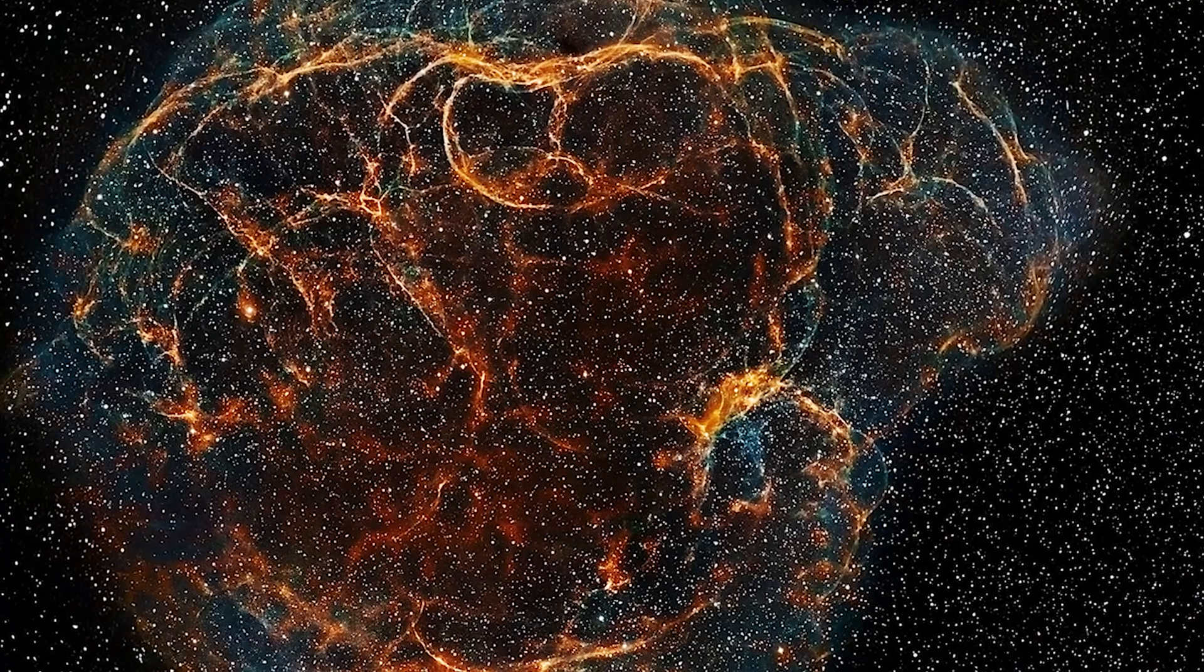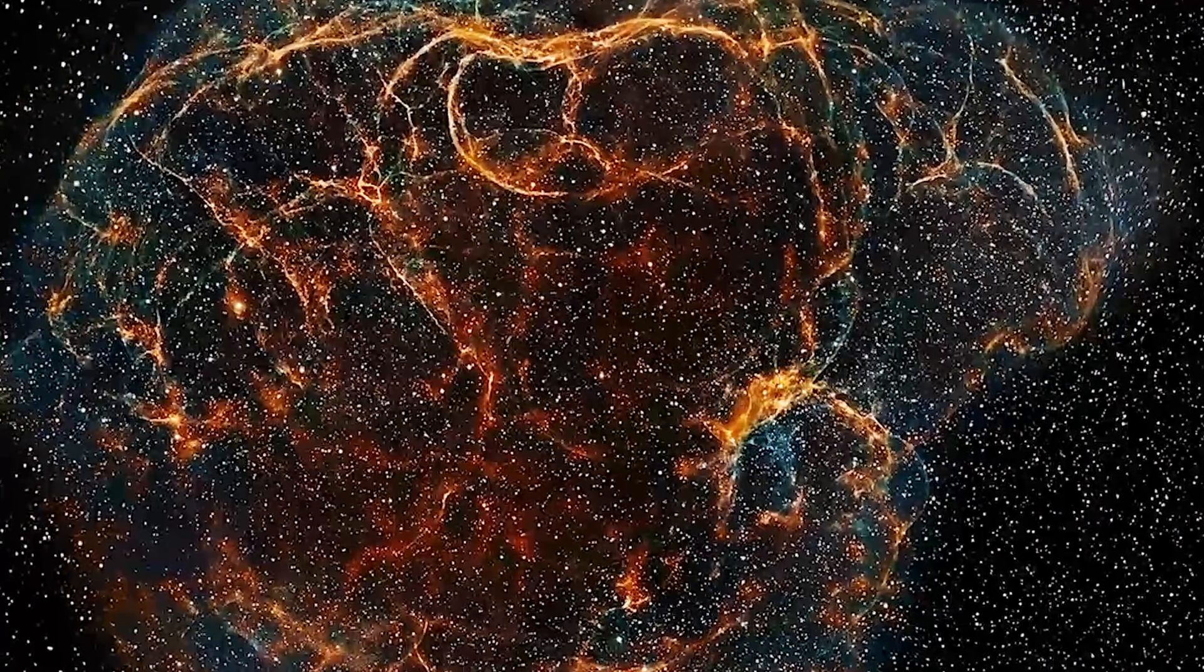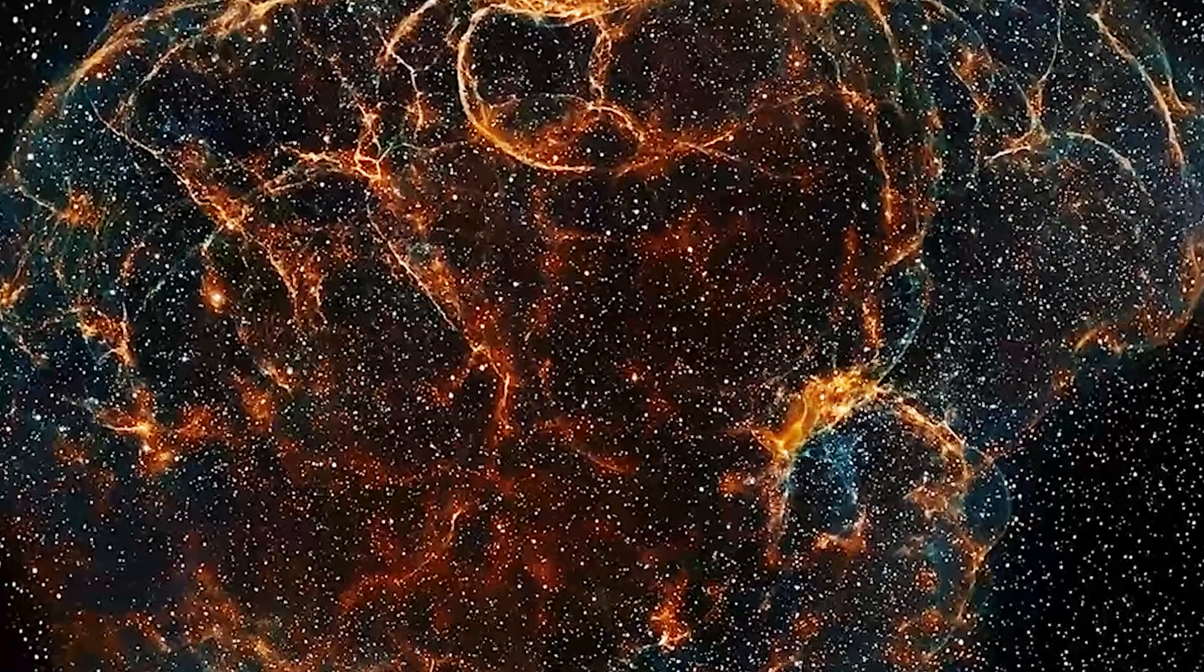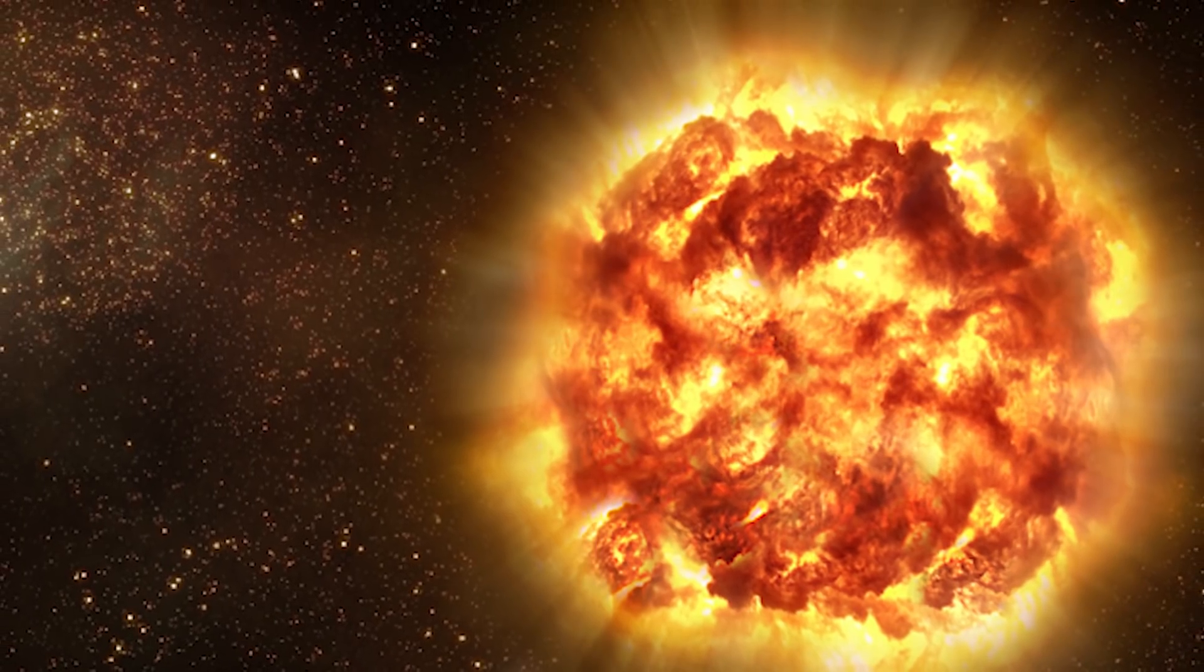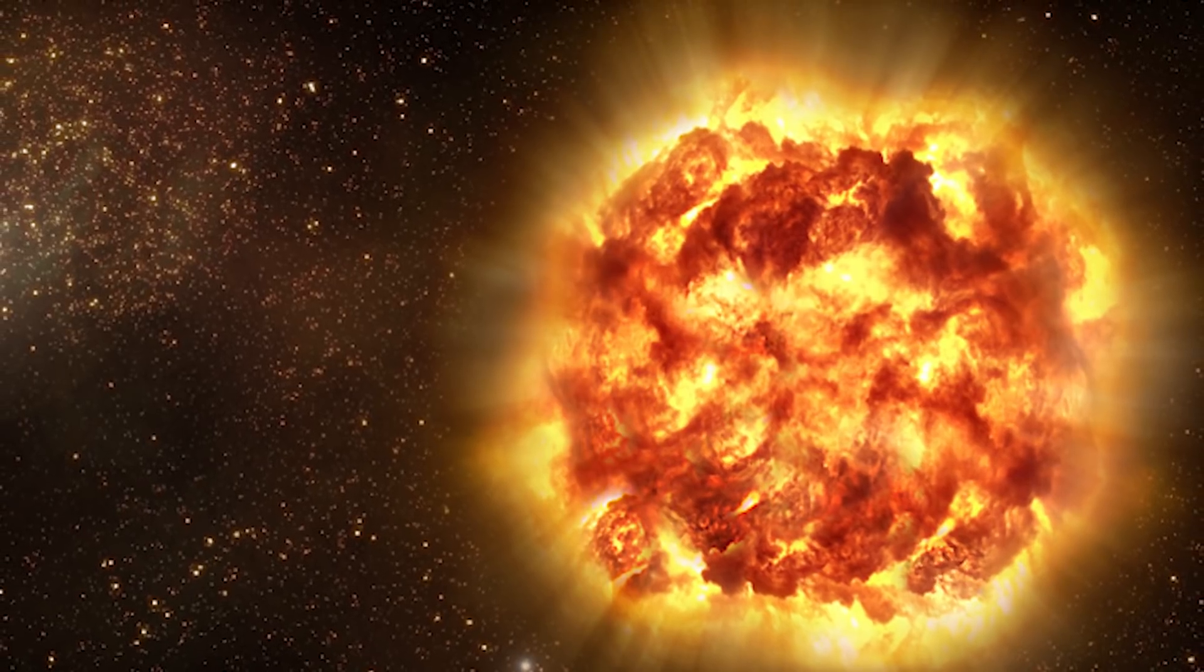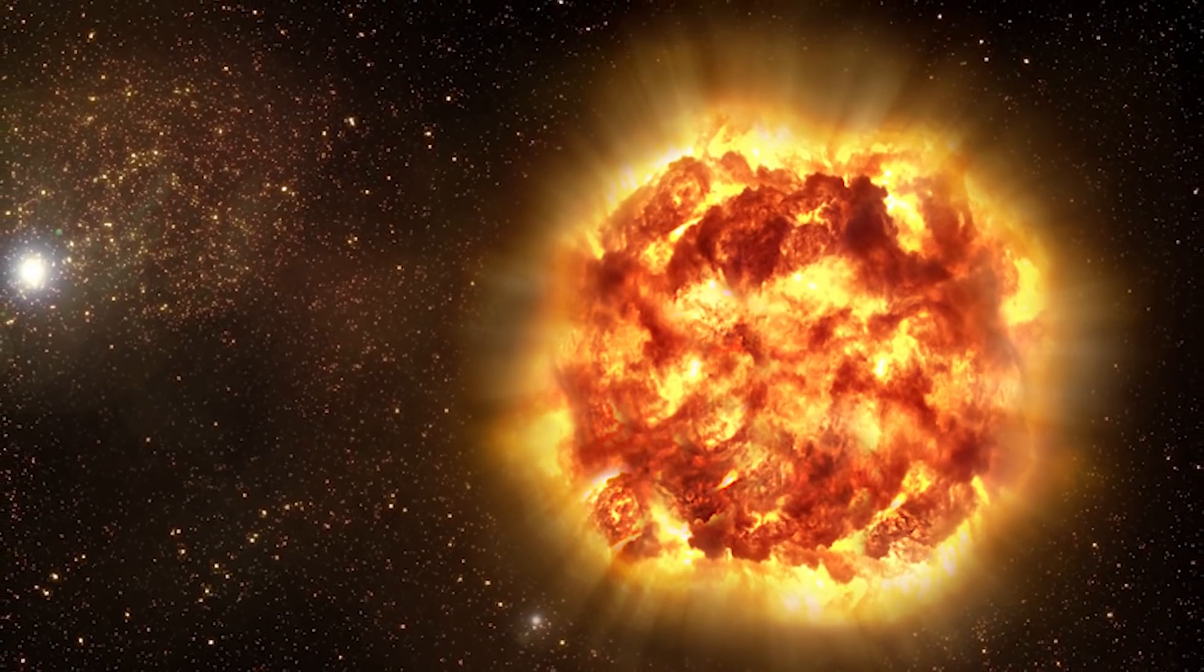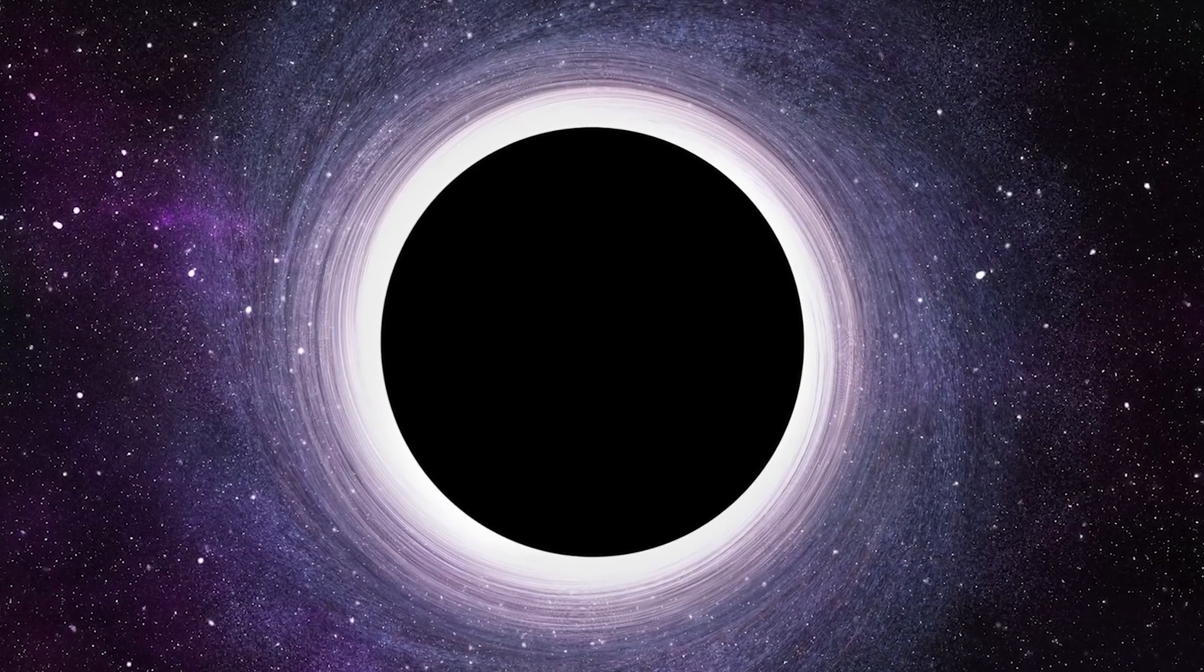After a type 2 supernova, what's left is a really dense object known as a neutron star. They are only a few miles across but they have as much mass as a star the size of our sun. A type 2 supernova can only occur if the star is several times more massive than the sun. Stars that are extremely massive might not actually explode into a supernova; they could be what creates black holes.